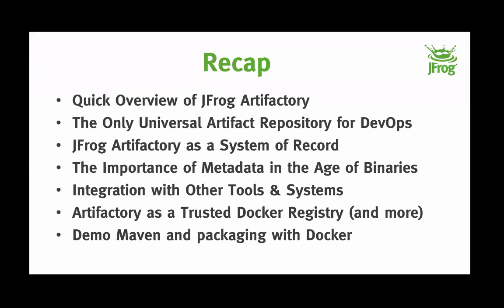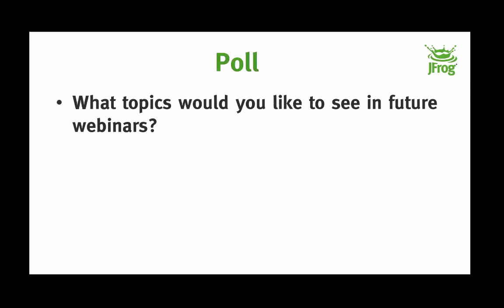Let's quickly recap: we covered the overview of JFrog Artifactory, how it serves as a universal artifact repository for DevOps, how it behaves as a system of record, the importance of metadata in the current age of binaries, Jenkins integration (though other CI tools are supported too), and Artifactory as a trusted Docker registry. We'll now take questions and run a final poll on what topics you'd like covered in future webinars.